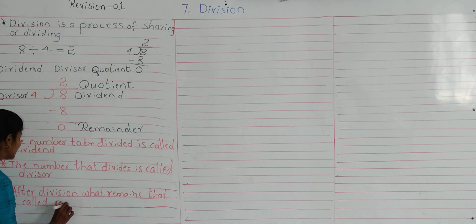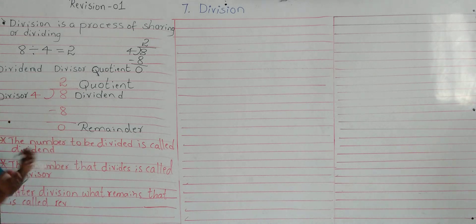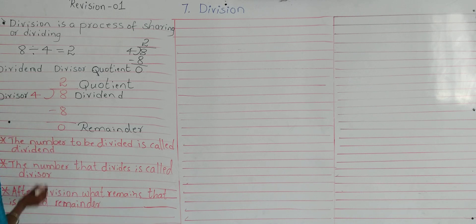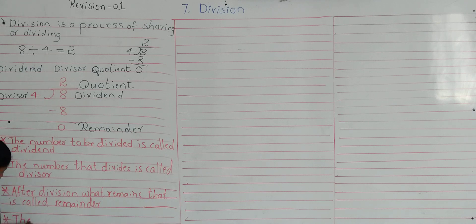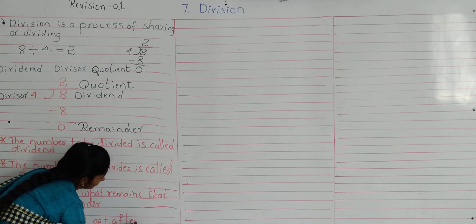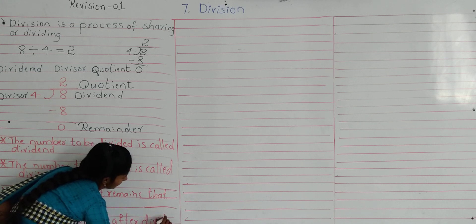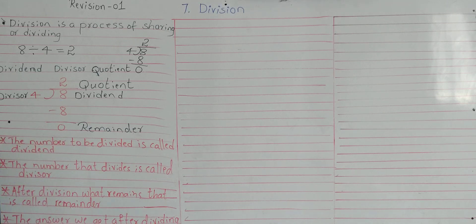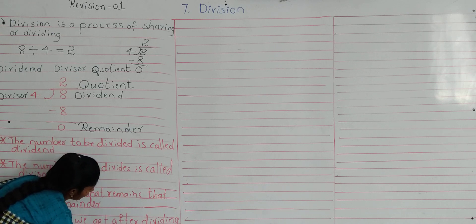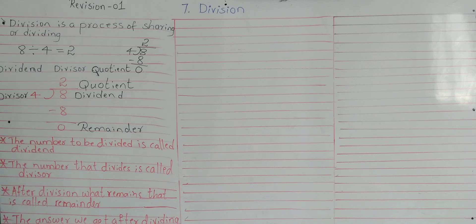After the division process, what remains undivided is called the remainder. The answer we get after dividing the dividend is called the quotient. So these are the division terms.